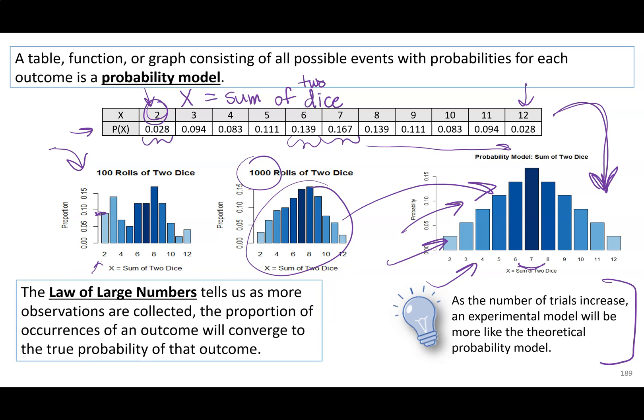There is a great theorem that describes that. The law of large numbers tells us: the bigger our sample size, or the more observations we collect, the proportion of occurrences will converge to the theoretical value. So models obtained by actually rolling a hundred times, then a thousand times — if I actually roll a million times, they're going to get closer and closer to this theoretical model.